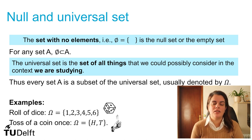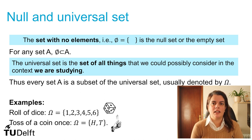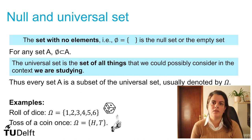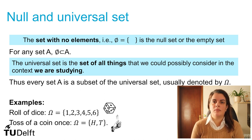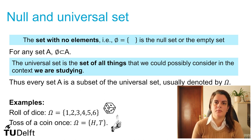Examples of universal sets include the following: for the roll of a die, you have the set containing all dice faces, such as 1, 2, 3, 4, 5, 6. For the toss of a coin, you have the set with two elements — heads and tails — because those are the only two outcomes that can appear.